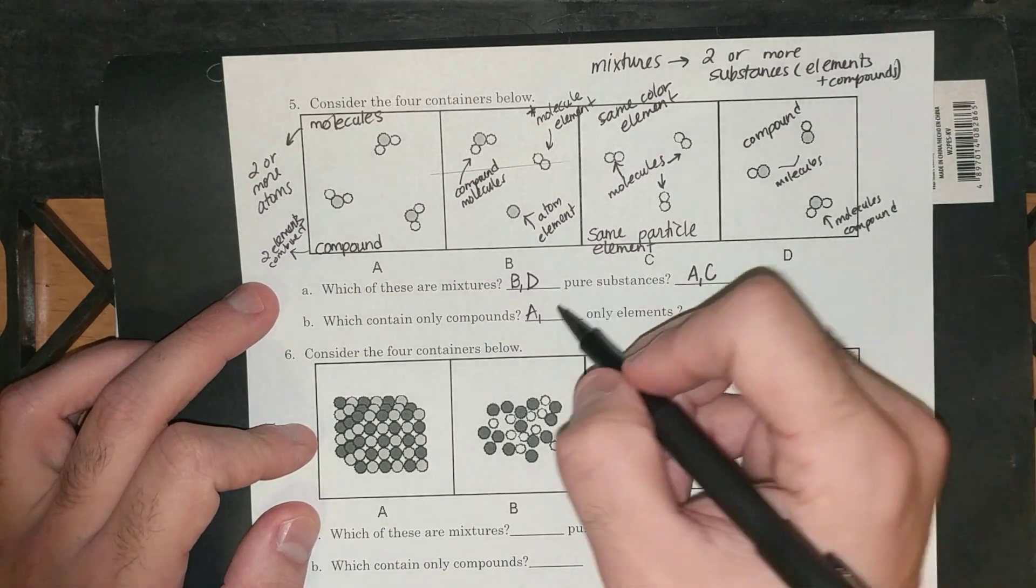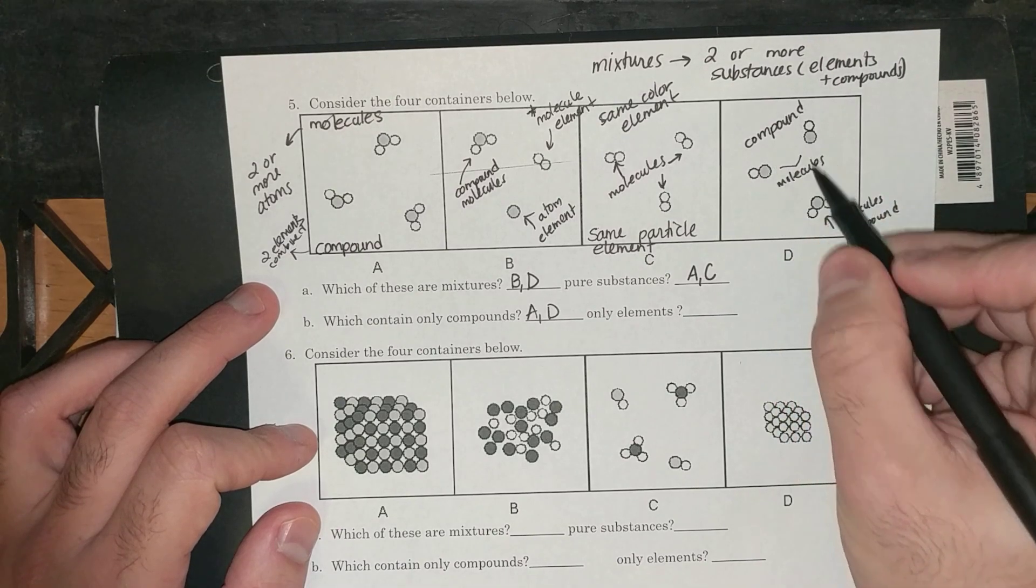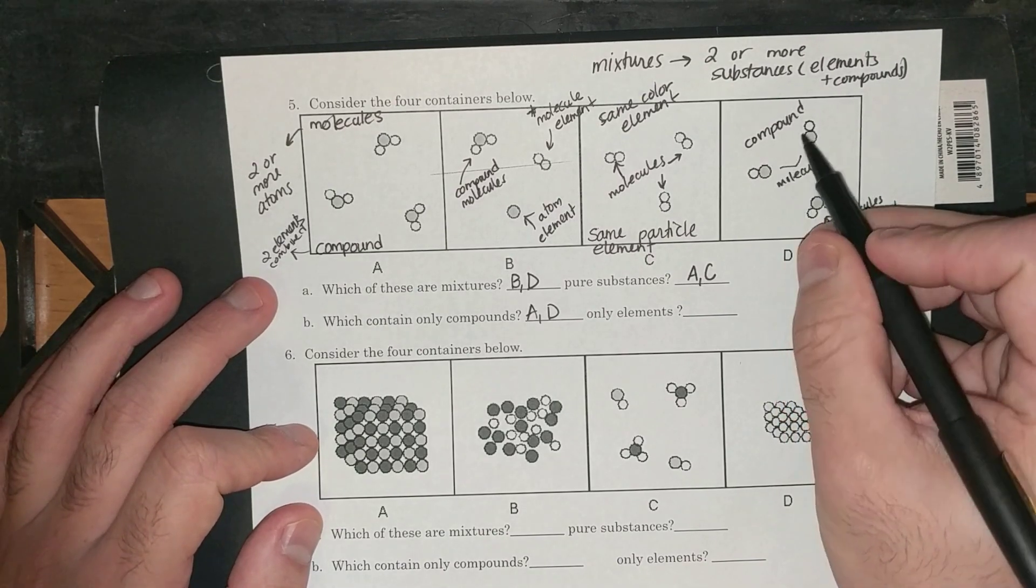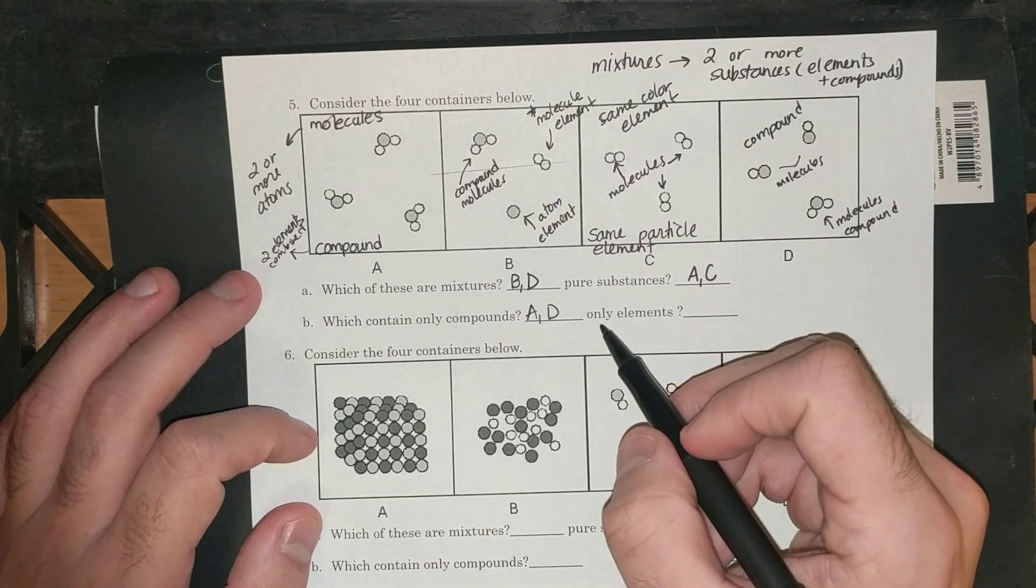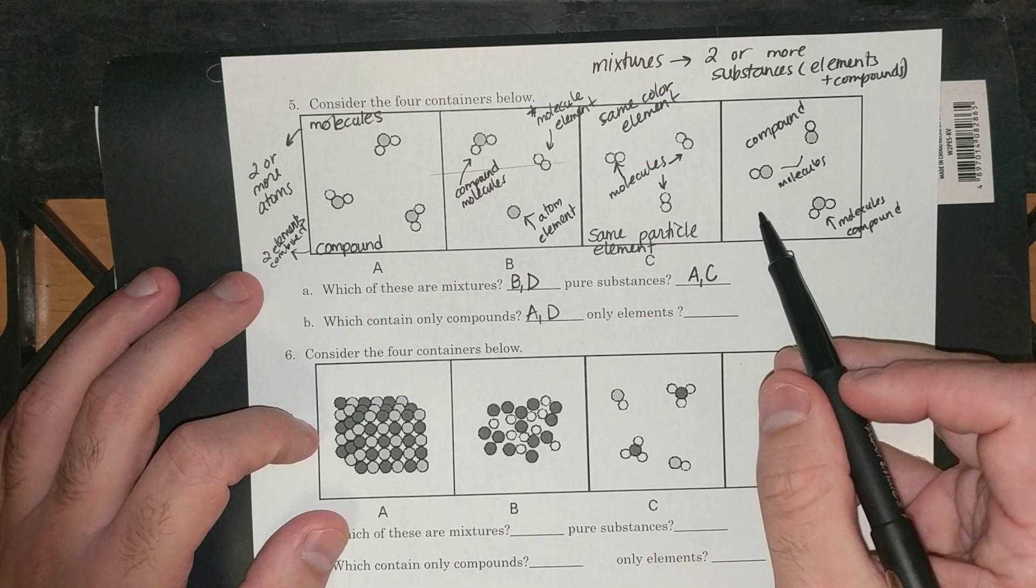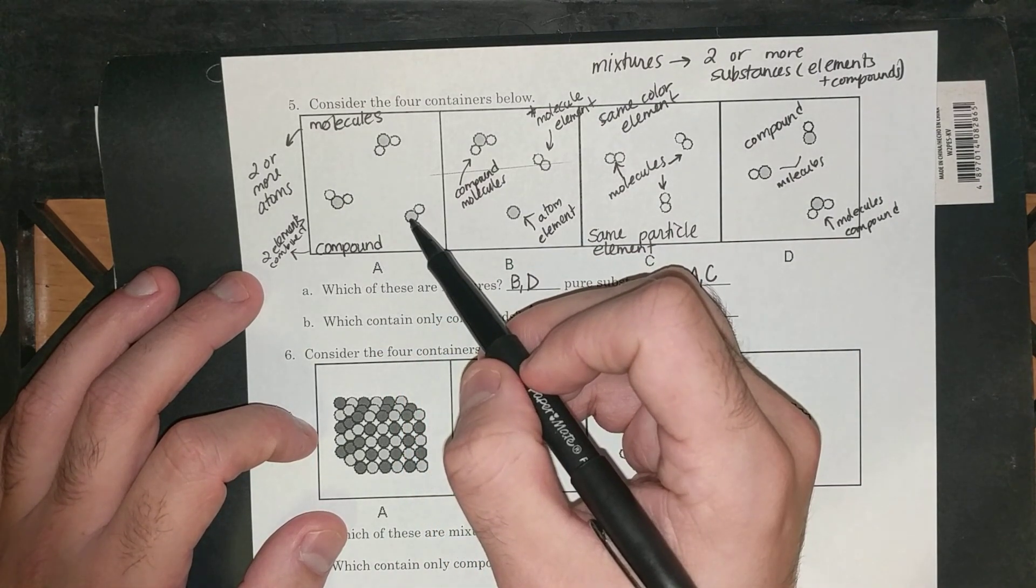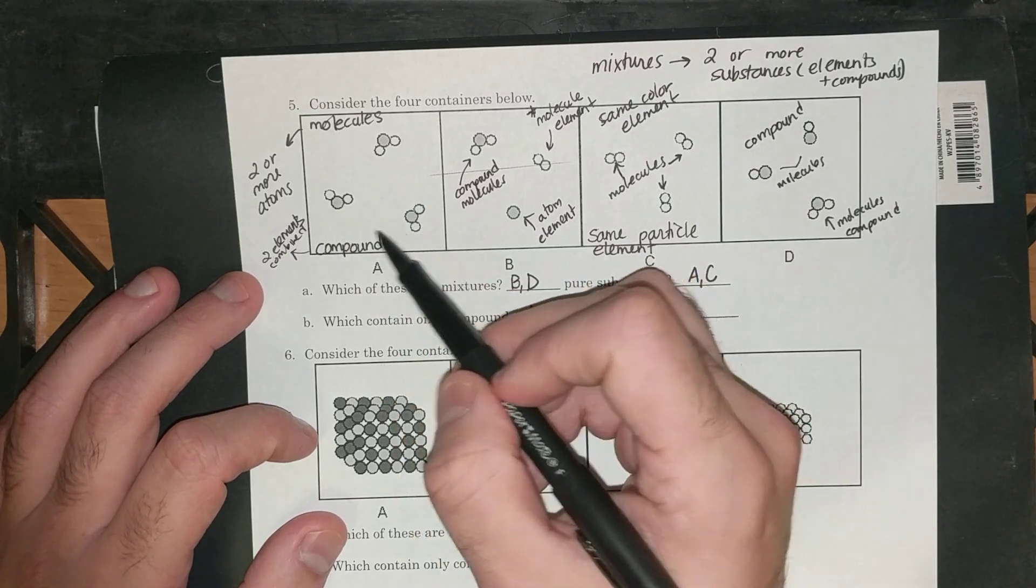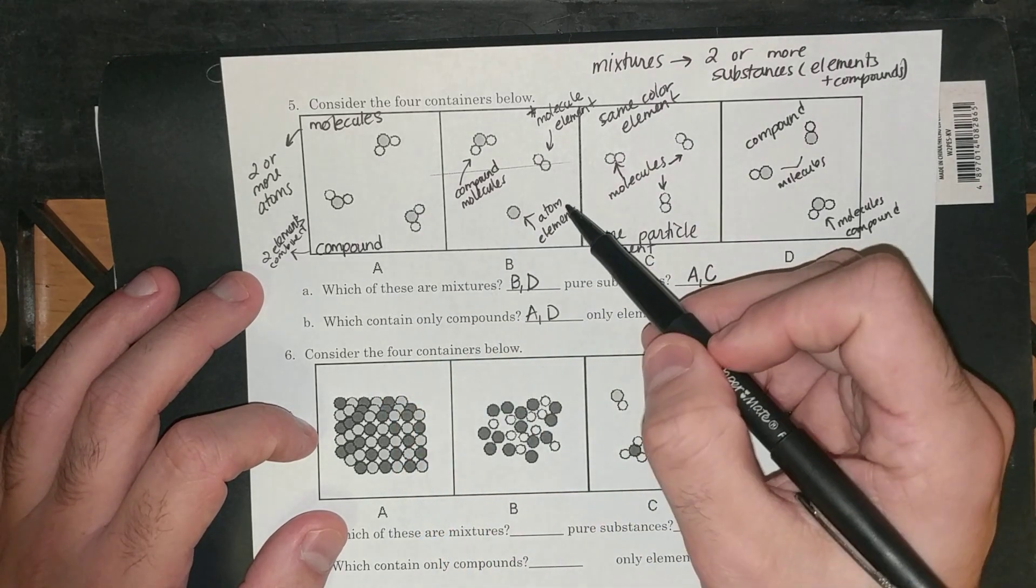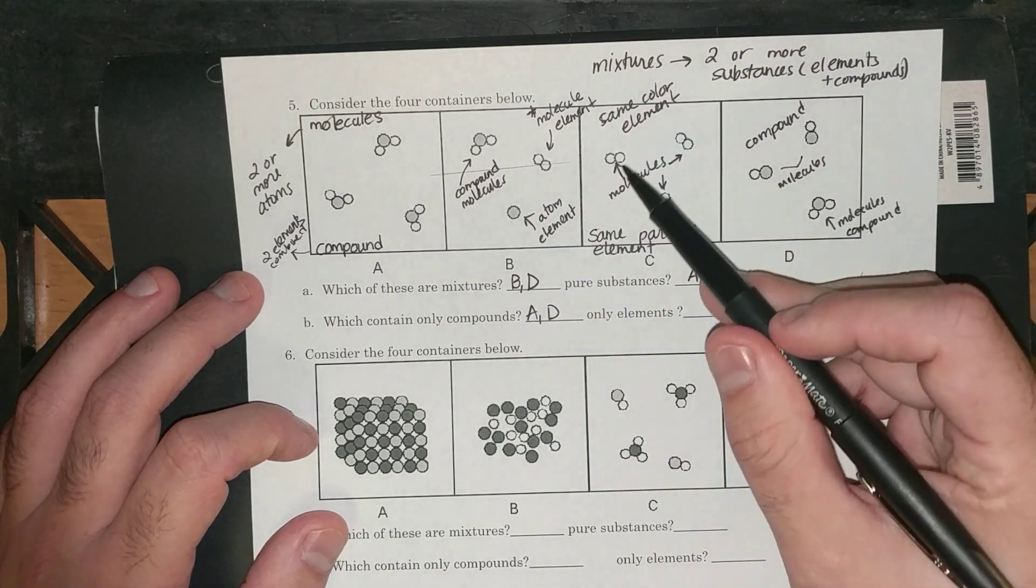C only contains molecules of elements, not compounds. And D, they have compounds. Two different compounds, but only contains compounds. Remember, compounds are two or more colors. And then finally, it says only elements. Which ones only contain elements? This first one, like we said, all of them are molecules and all of the molecules have two or more colors. So it's different compounds. These are all the same compound. This is a mixture of an element, element and compound.